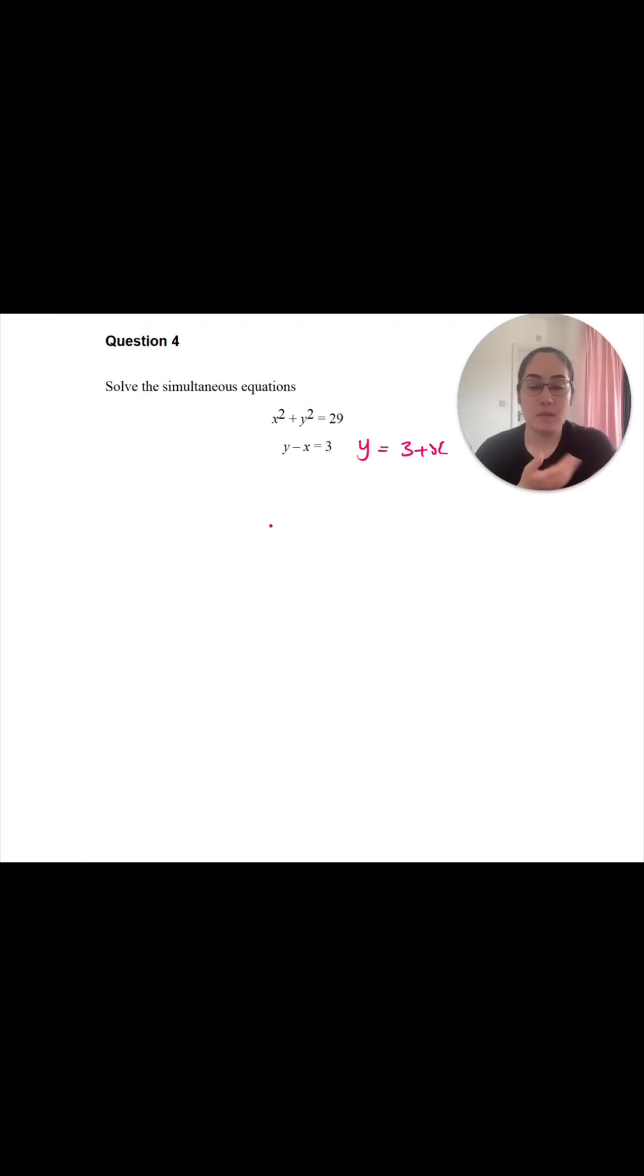So instead of saying y squared is equal to, I can say x squared plus 3 plus x squared. This is the value of y, which we're squaring. 3 plus x squared is equal to 29. So now I only have one unknown, which is x.